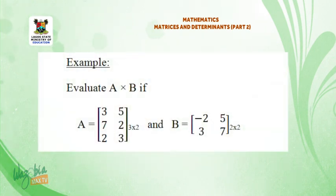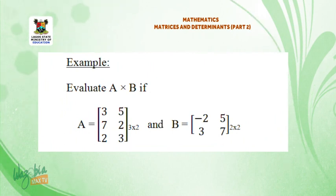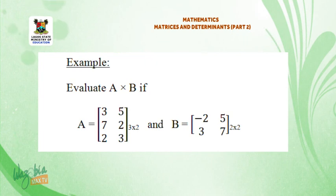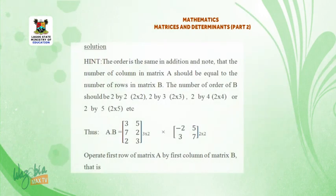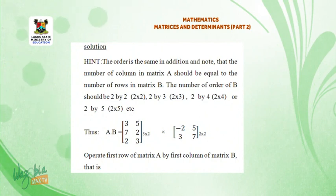Example. Evaluate A times B. If A is equal to the matrix: 3, 5, 7, 2, 2, 3 and B is equal to the matrix: minus 2, 5, 3, 7. Solution hint: the number of columns in matrix A should be equal to the number of rows in matrix B.